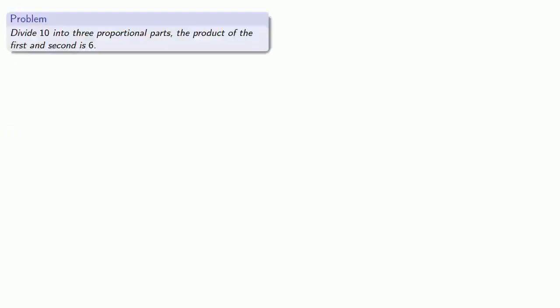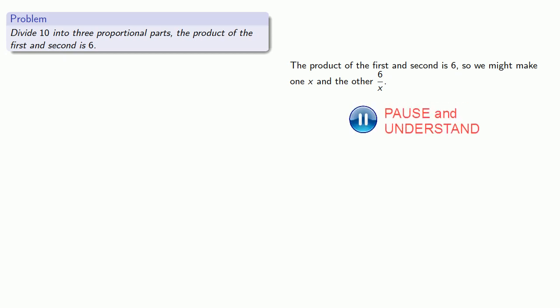Let's consider this problem. The requirement that the product of the first and second is 6, so we might make one x and the other 6 over x. It doesn't matter what order we take them, but Cardano made x the second term.